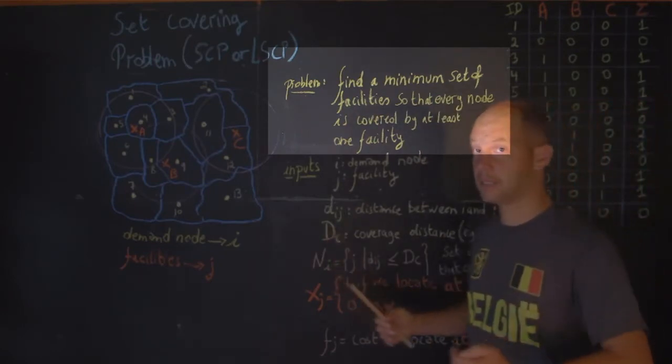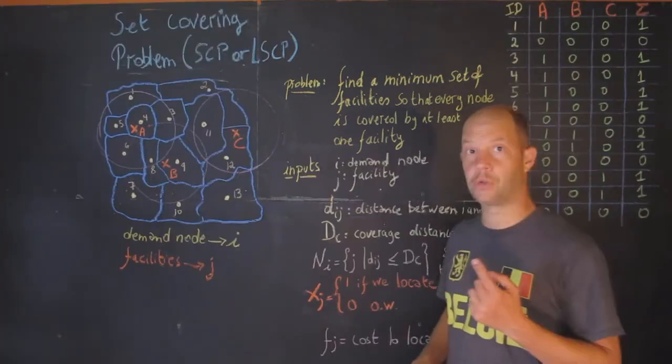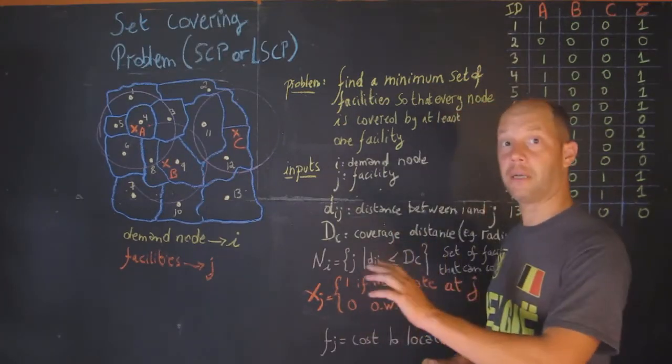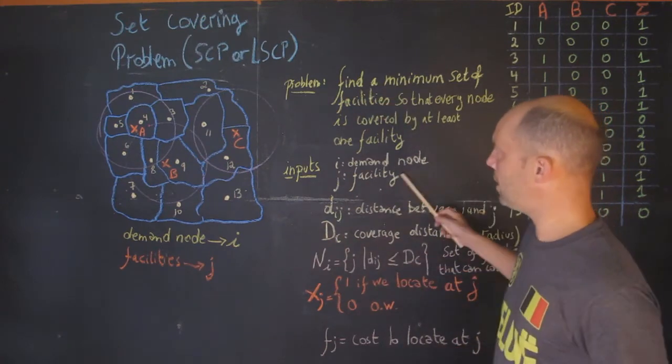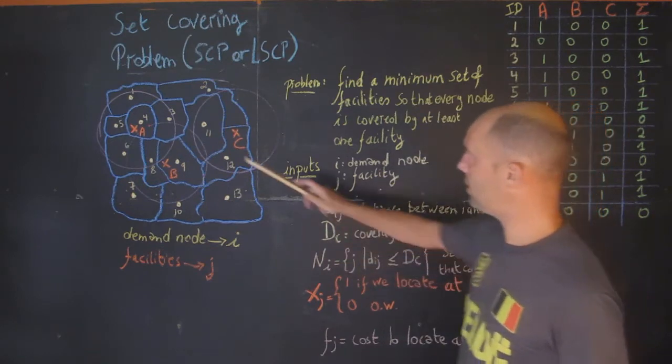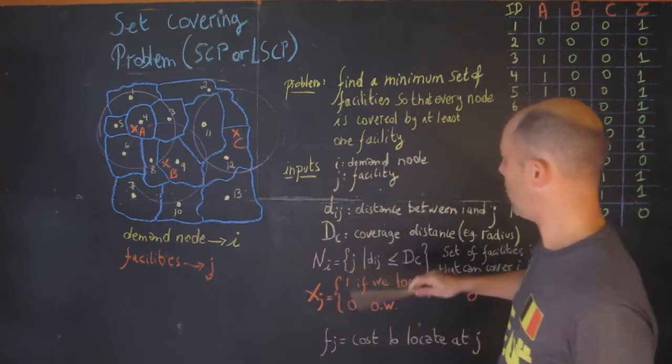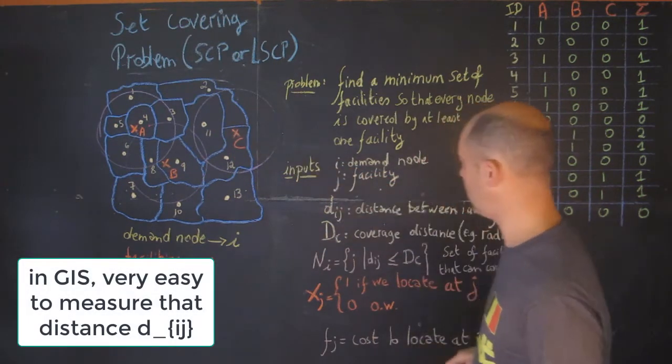Each node is covered by at least one facility. It could be by multiple facilities, but at least one. As input for the problem, we use the demand nodes and the facilities. We know the distance between each facility and each demand node, which we can calculate. That's called d_ij. We have another parameter called d_c, the coverage distance.